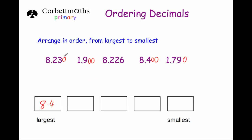Next we have either 8.23 or 8.226. Both have 8 in the units and 2 in the tenths column. Looking at the hundredths: 8.23 has a 3 in the hundredths column and 8.226 only has a 2. So 8.23 is next, followed by 8.226 — it has the 8 and the 2, but only a 2 in the hundredths column.